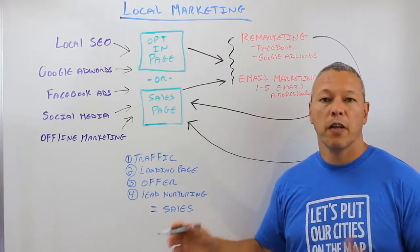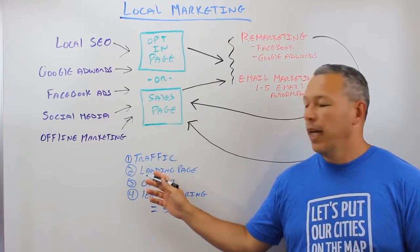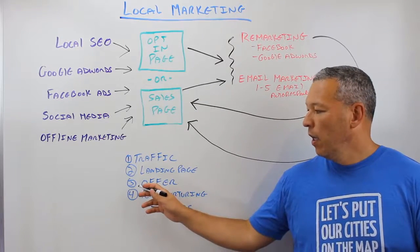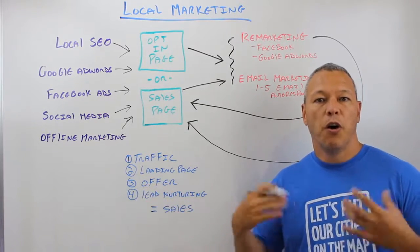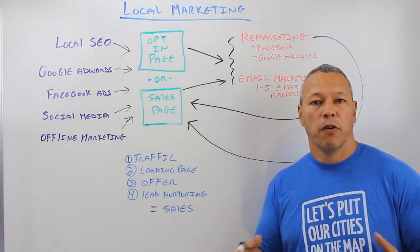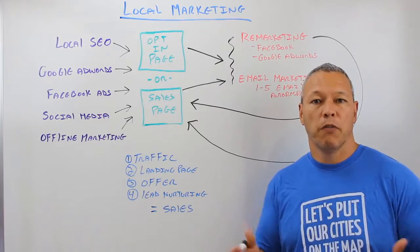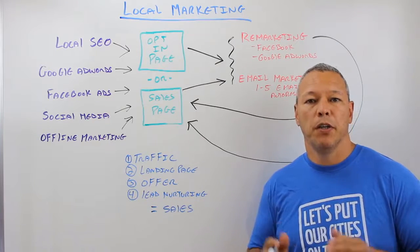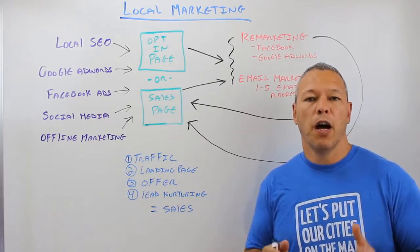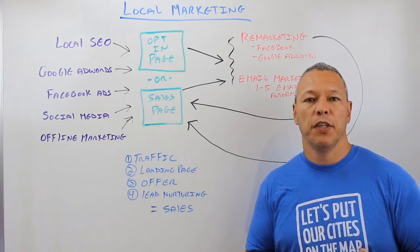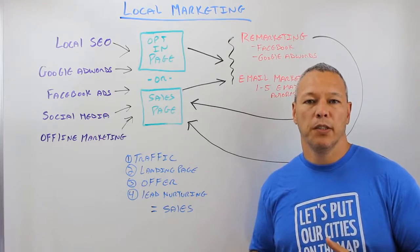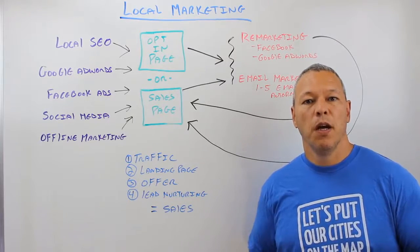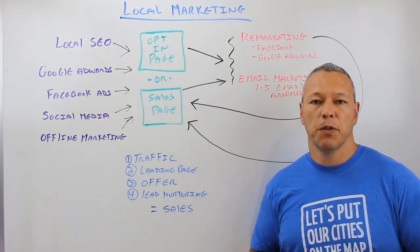Number one, traffic coming to your website. Number two, a landing page — where are they going to go once they're on your website. Number three, an offer — what are you going to offer them in return for a sale or an email. And number four, you need a lead nurturing campaign, because the vast majority of people that come to your site are not going to buy on the first visit. You need mechanisms in place to continue to reach out and nurture them until they're ready to become a customer.